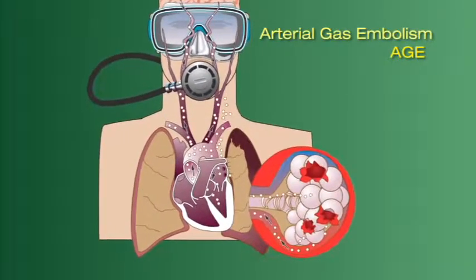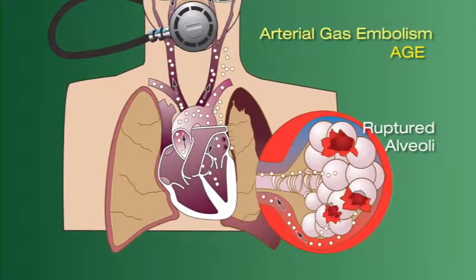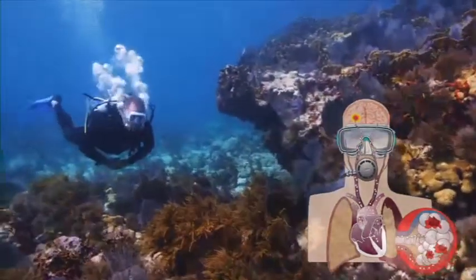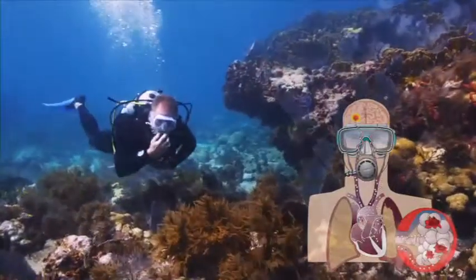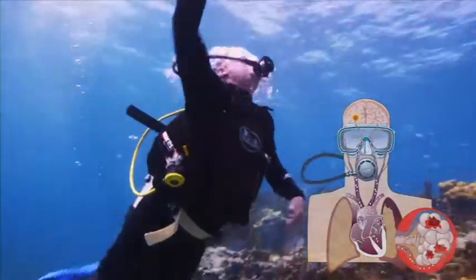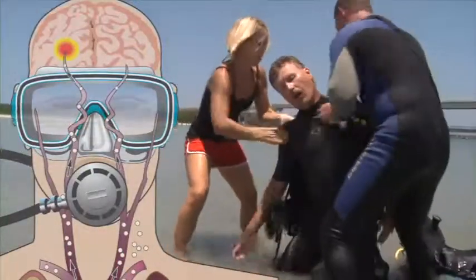Arterial gas embolism, or AGE, may occur as a result of lung overpressurization during ascent while breathing compressed air or other gas mixtures like enriched air nitrox. Typically, this occurs as a result of the diver holding his breath during ascent. The gas is then introduced into the arterial system following lung tissue rupture in the form of bubbles. As the arteries get smaller, eventually the gas bubble forms an obstruction. If the bubble passes directly to the brain, it can cause rapid and dramatic symptoms.